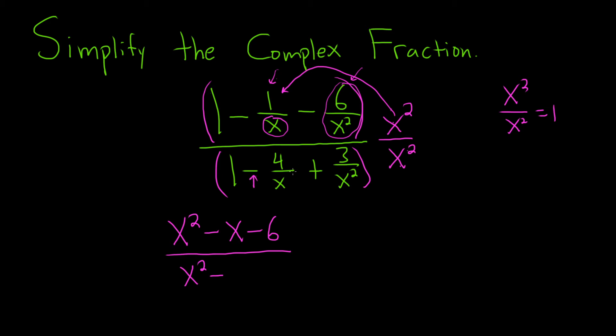And then x squared times 4 over x, well one of the x's will cancel, so we're left with 4x. And then x squared times 3 over x squared, on the bottom these will cancel, so we're left with 3.